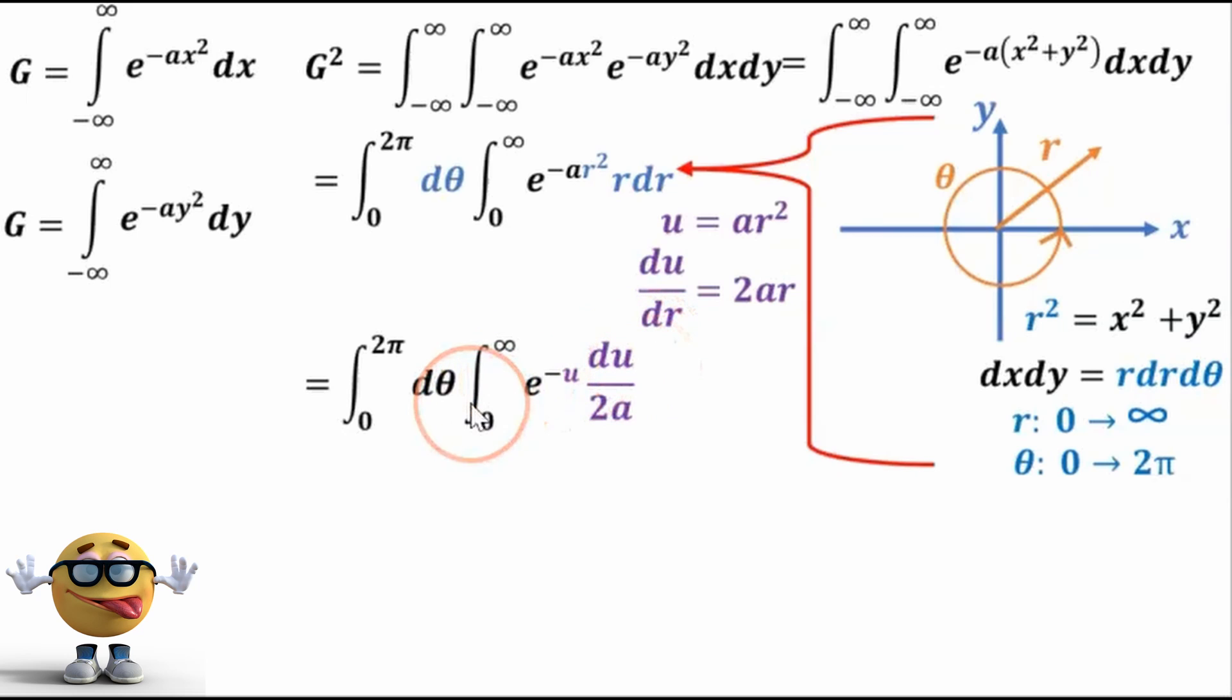So now we can evaluate this. So the integral of d theta is just theta. And we're going from 2 pi to 0. 2 pi minus 0. And the integral of this is our friend. It's itself.